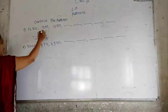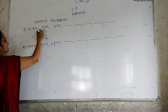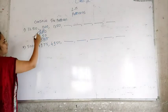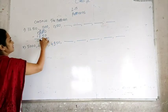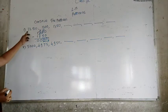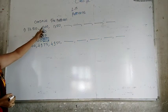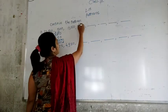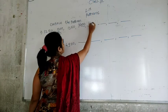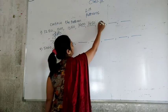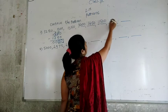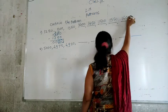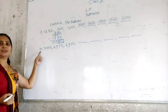1300 minus 1250: 0 minus 0 is 0, 0 minus 5 — write 10, carry 1 — so 10 minus 5 is 5, and 2 minus 2 is 0. The difference is 50. So continuing: 1250, 1300, 1350, 1400, 1450, 1500, 1550, 1600.